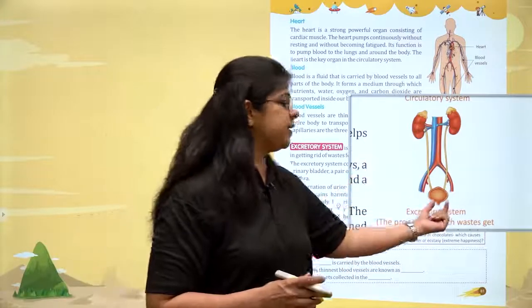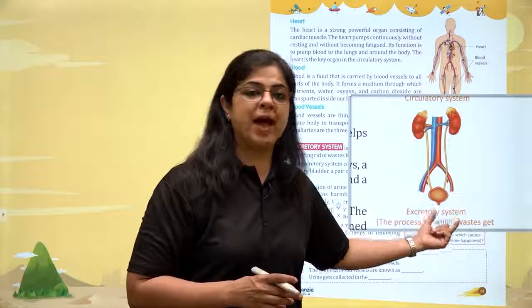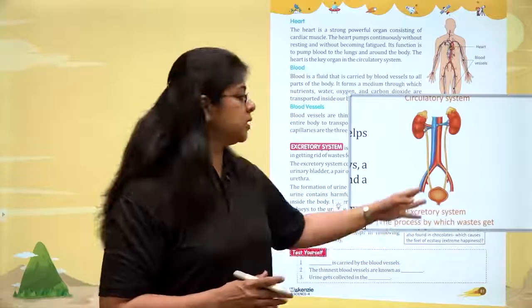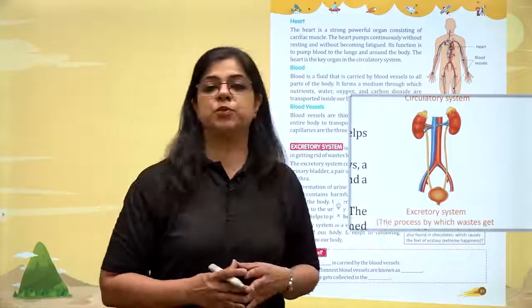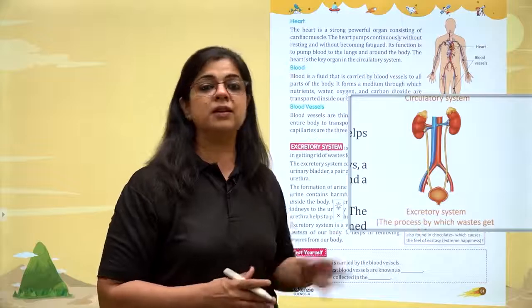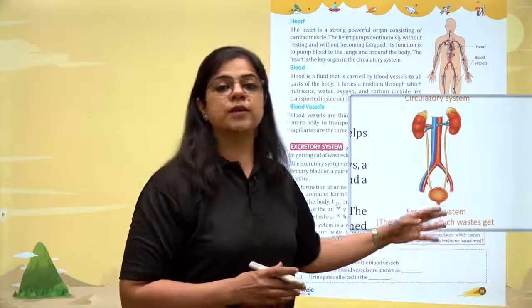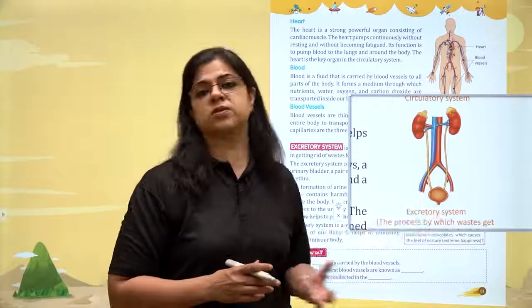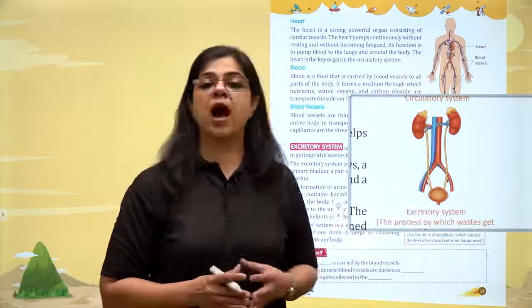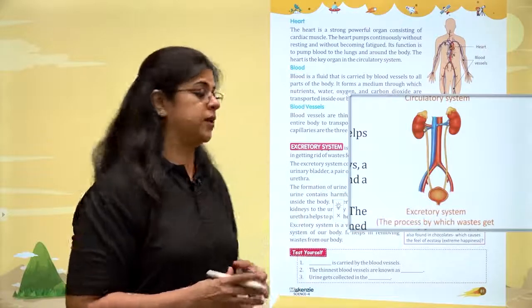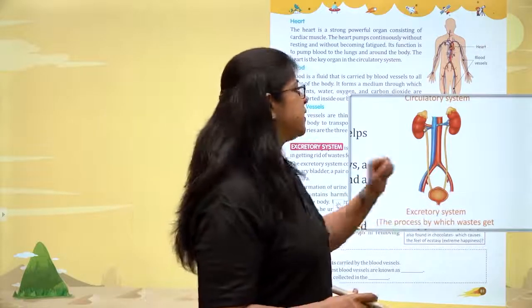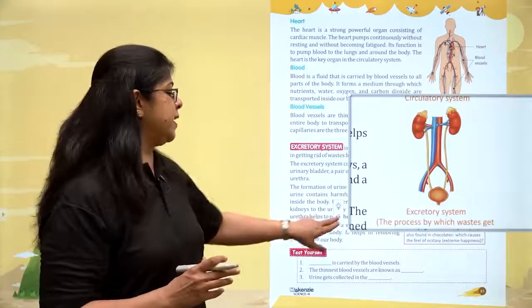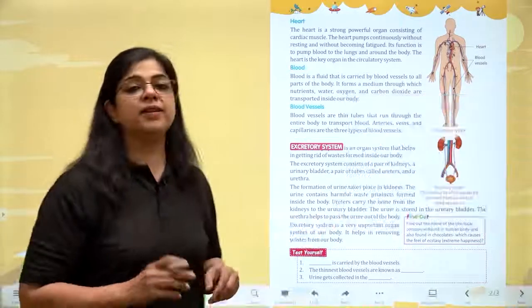it is collected in the urinary bladder, which is a bag-shaped organ. From this bag-shaped organ, or the urinary bladder, the urine — which is a combination of all the toxic material — is thrown out of the body. In this way, the excretory system keeps our body clean at all times.